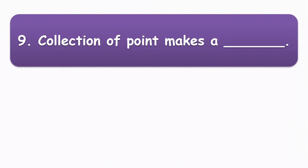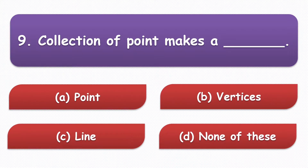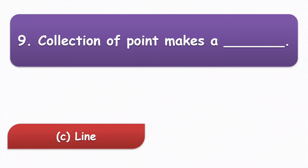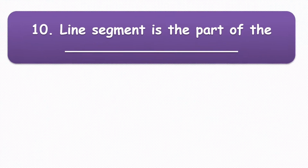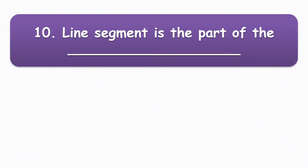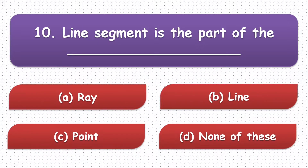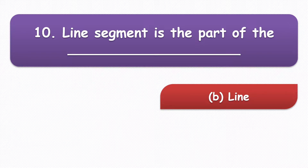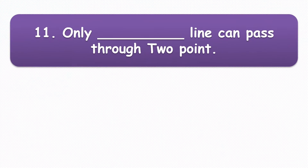Next question: a collection of points makes a blank. The options are point, vertices, line, or none of these. The correct answer is line. Next question: a line segment is the part of a blank. The options are ray, line, point, and none of these. The answer is line.